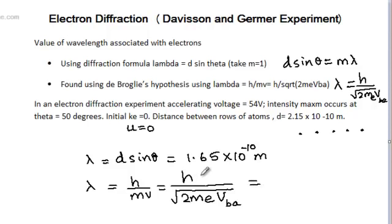So, now, if you plug in all the values, h is Planck's constant, m is the mass of the electrons, e is the charge of the electrons, and v is the accelerating voltage, which is 54 volts, you get a value of 1.67 times 10 to the power minus 10 meter.